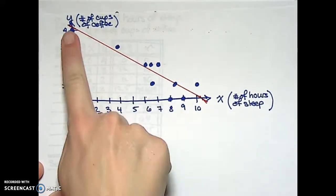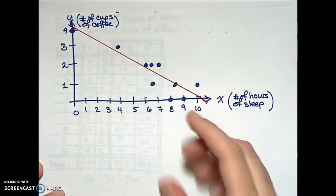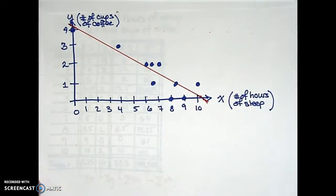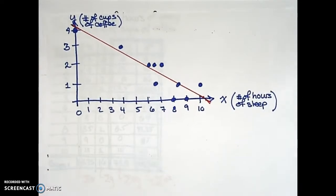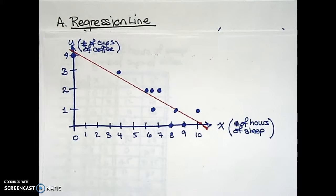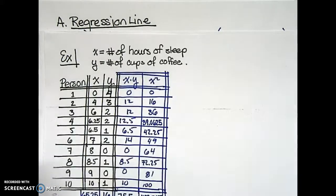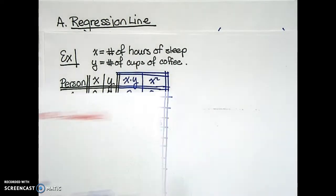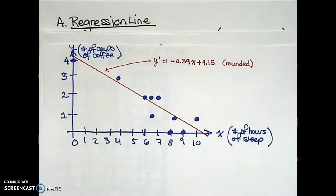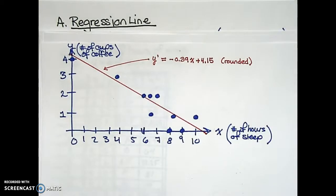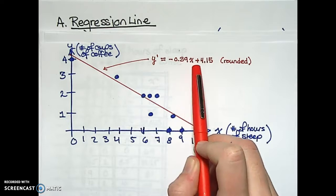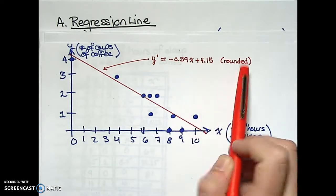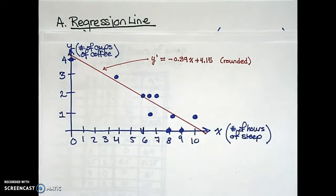It looked as if we could draw a line to somewhat fit the data, and we then sought to find the best line that would match up to this data. In other words, we sought to identify the regression line. The method we used was that of least squares, which required a number of computations. In the end we were able to find a formula to represent this estimated regression line: negative 0.39 (our slope) times x plus 4.15 — these values were rounded.